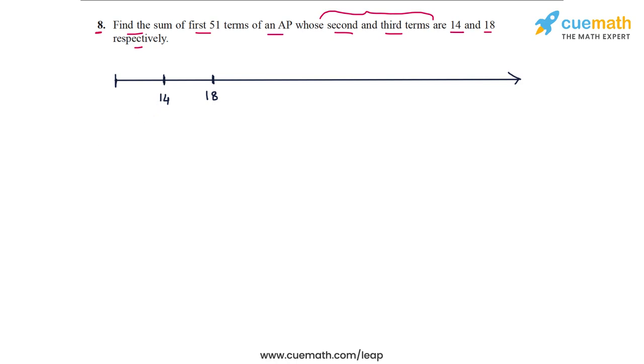The second term is 14, the third term is 18. Because we are given two consecutive terms of the AP, we can immediately say that the common difference of the AP is 4. D equals 4.